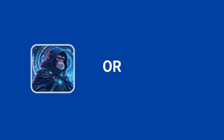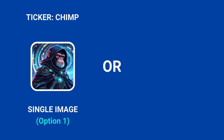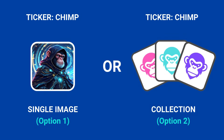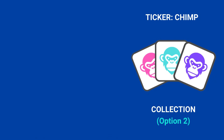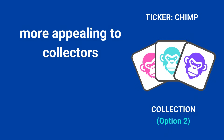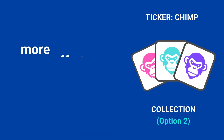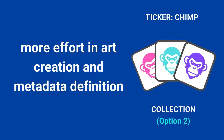You can choose to create a single unique image that can be minted multiple times until the maximum supply is reached, or design every token in the NFT collection as a unique image with its own distinct attributes, like different traits. In both cases, all tokens are tied to the same ticker. Creating NFTs with unique images and traits enhances rarity, value, and engagement. Each token becomes distinct, appealing to collectors while fostering a sense of ownership and enabling utilities like gamification or personalized experiences. However, this approach requires more effort in art creation and metadata definition.